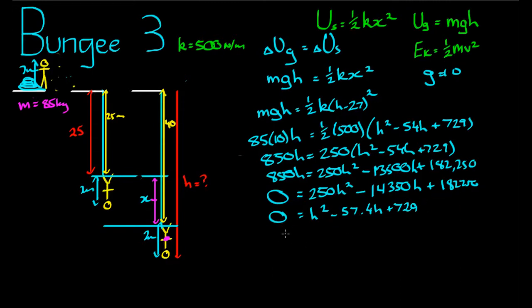Anyway, this is in the form 0 equals ah squared plus bh plus c. a is equal to 1, b is equal to negative 57.4, c is equal to 729.